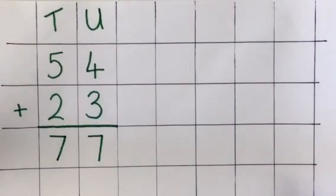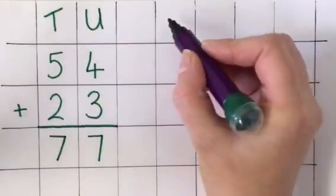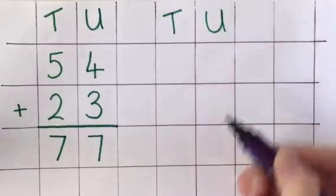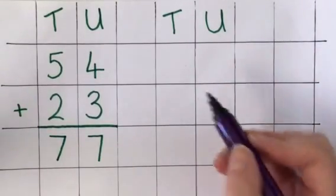I'll do another one just to be sure that you understand. So I'm going to put my tens and units columns in place before I start. I'm going to add 62,